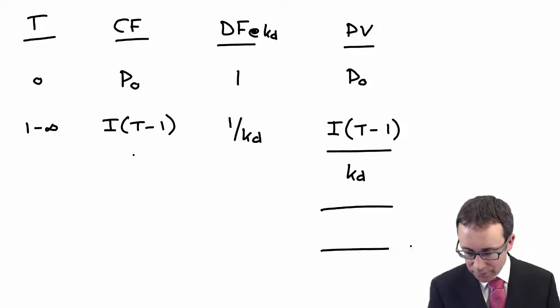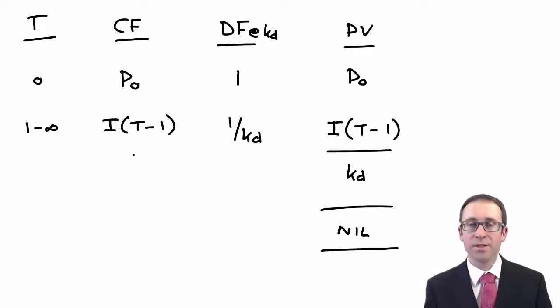What you should then have is the interest multiplied by the tax charge less one divided by the cost of debt. But that should, in an IRR calculation, be zero. Because KD, that IRR figure, is discounting the future cash flows to be equal to what the market value is. So the market value equals the discounted cash flows, so the difference between them must be nil.